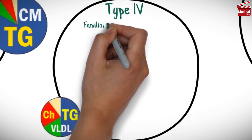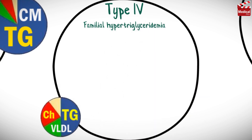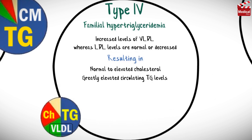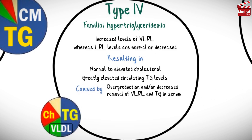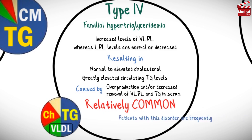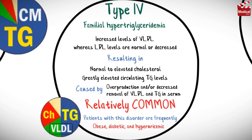Type 4, familial hypertriglyceridemia. This type is characterized by increased levels of VLDL, whereas LDL levels are normal or decreased, resulting in normal to elevated cholesterol and greatly elevated circulating triglycerides levels. It is caused by overproduction and/or decreased removal of VLDL and triglycerides in serum. This is a relatively common disease. Patients with this disorder are frequently obese, diabetic, and hyperuricemic.